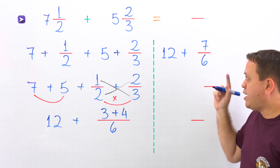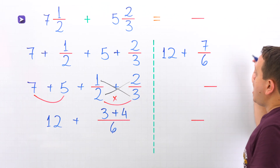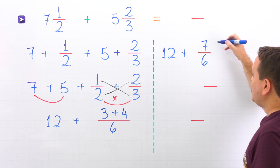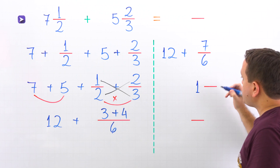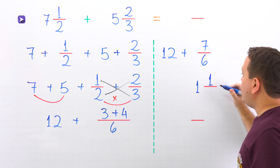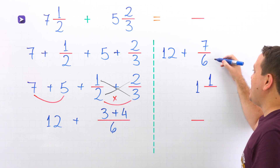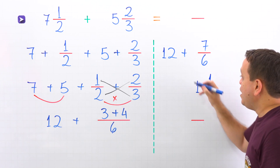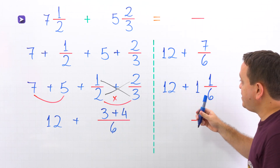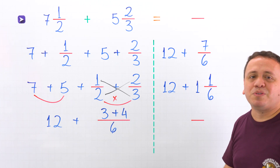Since we don't want an improper fraction in the final answer, we need to convert this improper fraction. How many times does 6 go into 7? Well, 6 goes into 7 one time. Then we multiply: 1 times 6 is 6. To get 7, we need to add 1. We keep the denominator the same — 6. Don't forget 12 and the plus sign. In this line, we have the sum of a whole number and a mixed number. We just need to follow the same steps we have seen in this video.